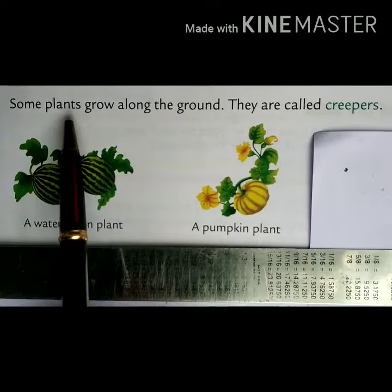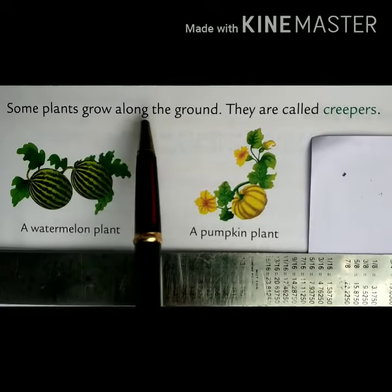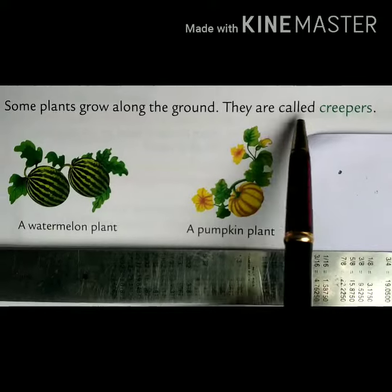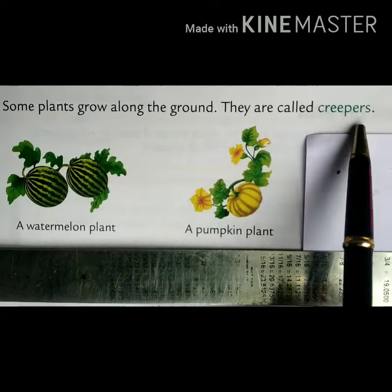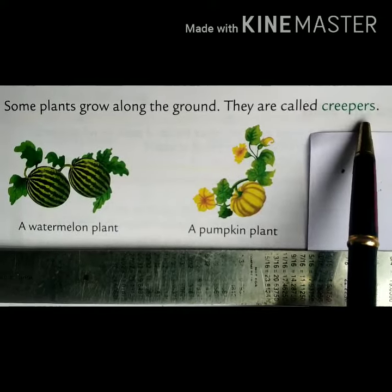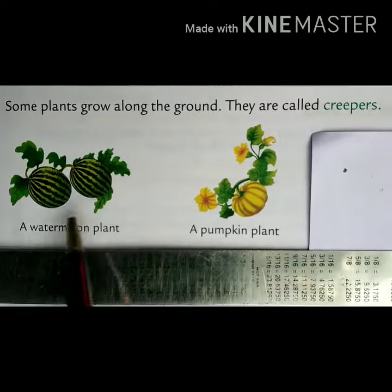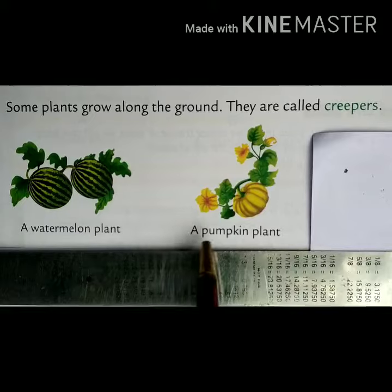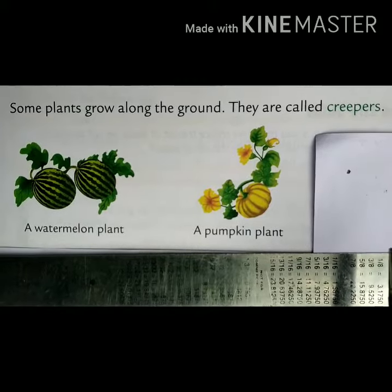Some plants grow along the ground. They are called creepers. Examples are watermelon, pumpkin, etc.